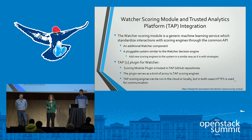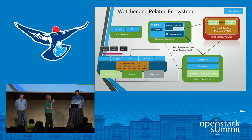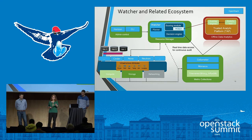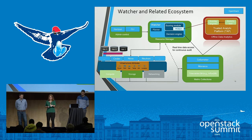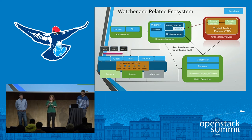Going back to the Watcher scoring module — if you look at where Watcher fits in the ecosystem, it's optimizing an OpenStack cloud based on strategies. Up until now those strategies were really part of Watcher itself. One example of an external integration is the Trusted Analytics Platform, TAP — though this is just one example of an implementation; it could be a different external service. A scoring engine can be published into the Watcher scoring module and then used just like any other strategy.